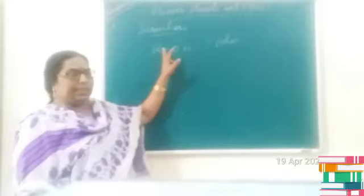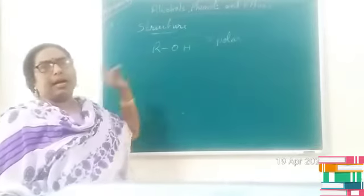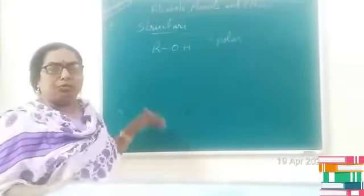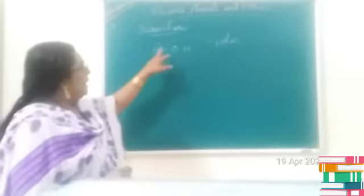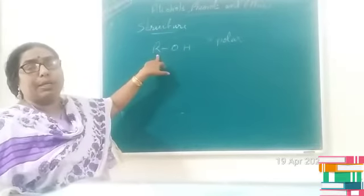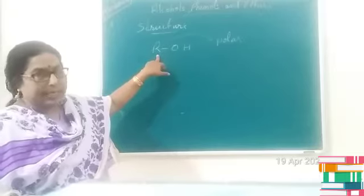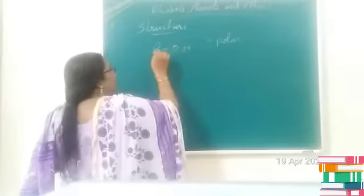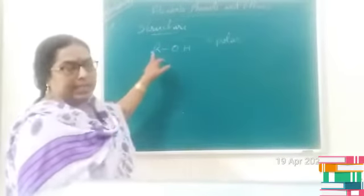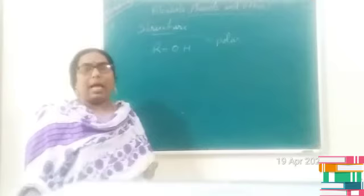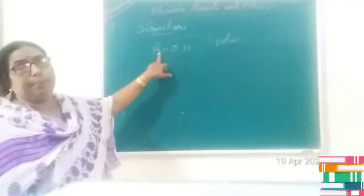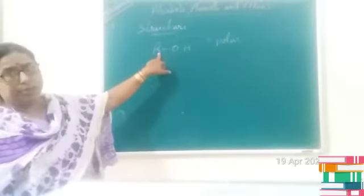Now, the oxygen in OH and the carbon are attached through a sigma bond, which is formed by the overlapping of the sp3 hybridized orbital of oxygen and the sp3 hybridized orbital of carbon. Between R and O, you can see the formation of a sigma bond formed by the overlapping of the sp3 hybridized orbitals of oxygen and the alkyl group carbon.